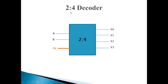For example, first is a 2-to-4 decoder. Here input lines are 2 and output lines are 2 raised to 2, that is 4. So here n is 2 and output lines are 2 raised to n, that is 4. Along with this input, we have one more input called enable.